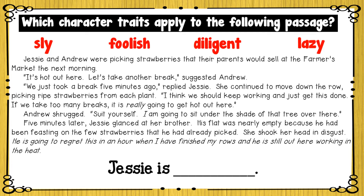Let's see which character traits apply to the following passage. Jesse and Andrew were picking strawberries that their parents would sell at the farmer's market the next morning. 'It's hot out here. Let's take another break,' suggested Andrew. 'We just took a break five minutes ago,' replied Jesse. She continued to move down the row, picking ripe strawberries from each plant. 'I think we should keep working and just get this done. If we take too many breaks, it is really going to get hot out here.' Andrew shrugged.